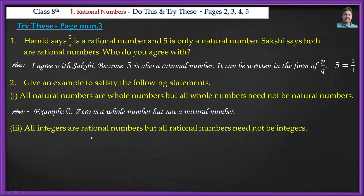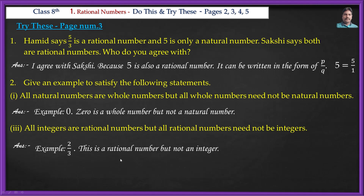All integers are rational numbers, but all rational numbers need not be integers. For example, 2/3 is a rational number but not an integer.